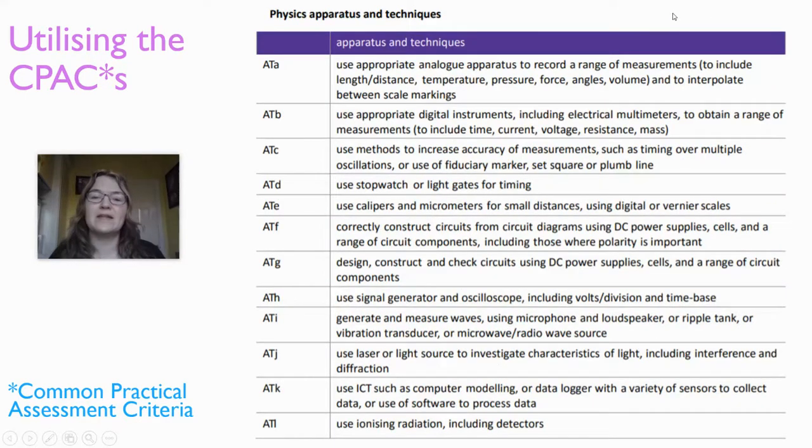There's also the apparatus and techniques that you require, and these are listed here. So they have to be able to actually use these different bits of equipment: analog apparatus, digital instruments, different measuring methods, watchers or light gates, calipers and micrometers, whether digital or vernier scales, constructing circuits, designing and checking those, using signal generators and oscilloscopes, generating and measuring waves, using light, lasers or light source. All of these are important critical tools, important to be able to use data logs or ICT, and using ionizing radiation including the detectors.